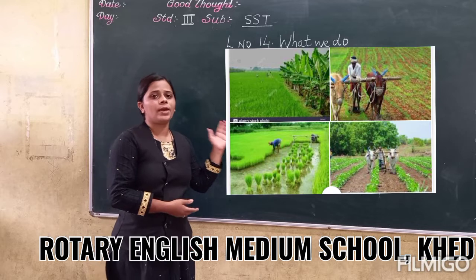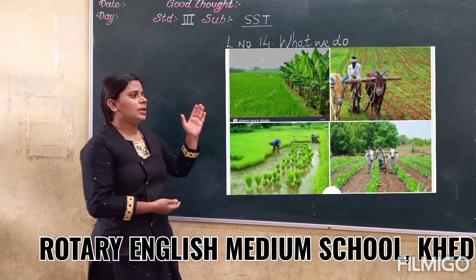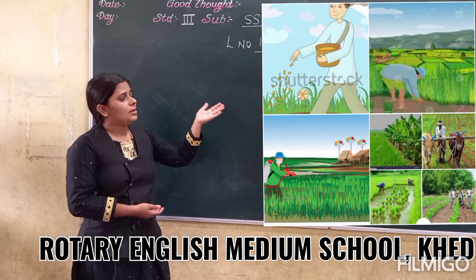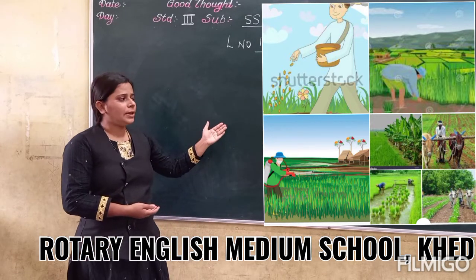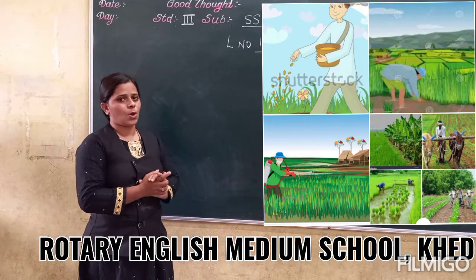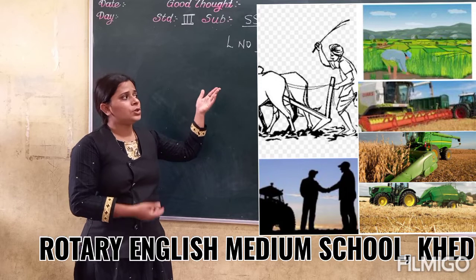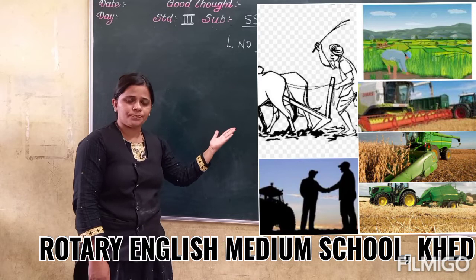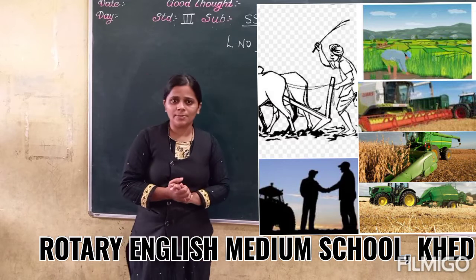Farmers work very hard to grow crops. They sow the seeds, add manure to the plants, and water the seedlings — all to get good quality crops. Our government also helps farmers by giving loans so that they can buy quality seeds, tractors, threshers, etc.